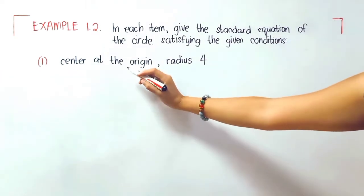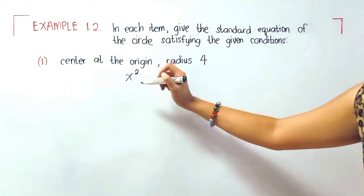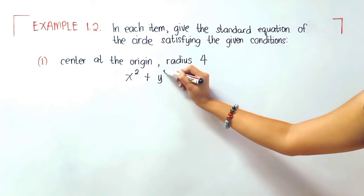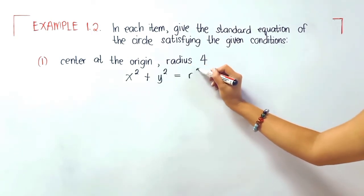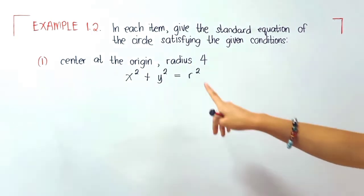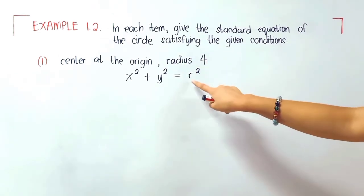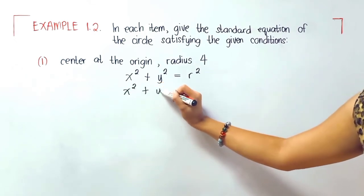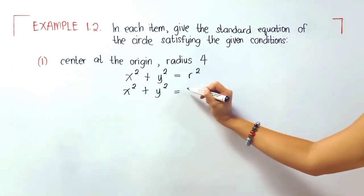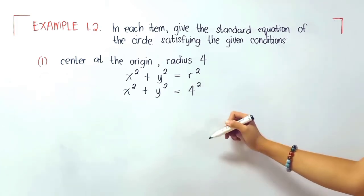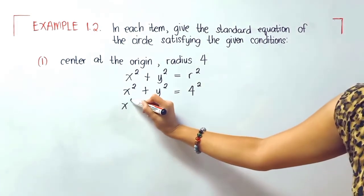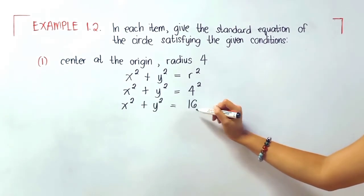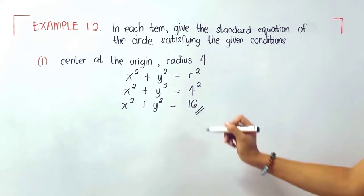Since the center is at the origin, we will be using x squared plus y squared is equal to r squared. Our radius here is 4, so we will substitute that in: x squared plus y squared is equal to 4 squared. Now let's rewrite that — 4 squared is equal to 16. This is our final answer.